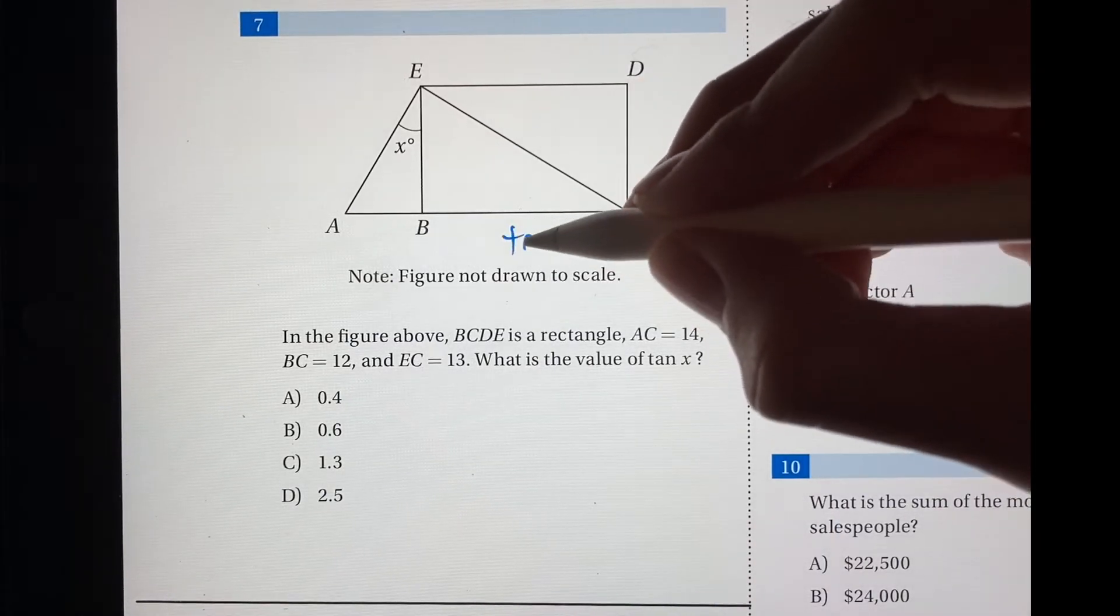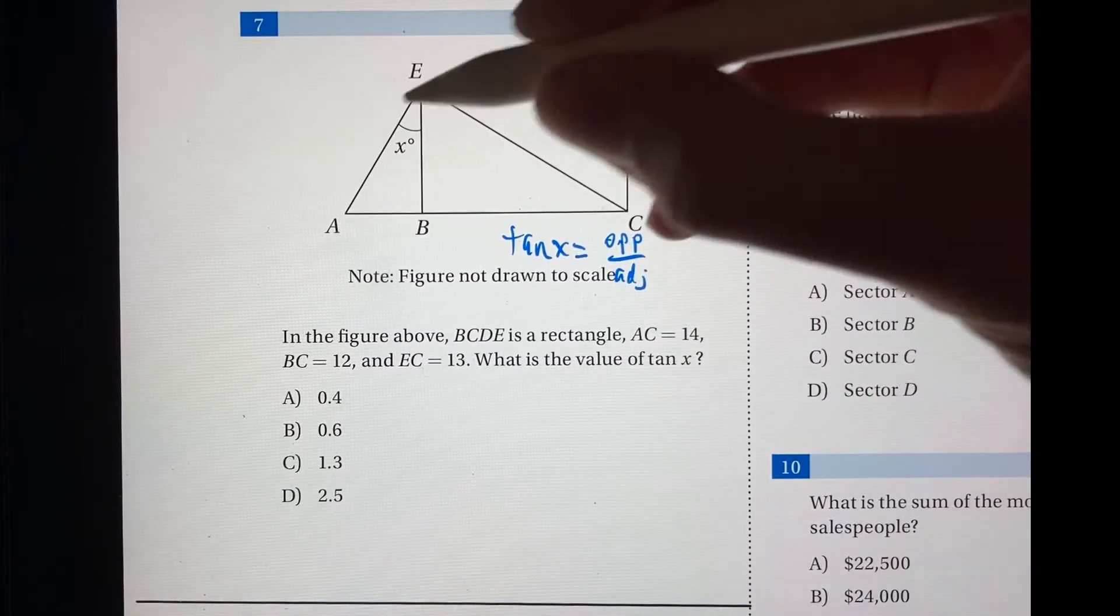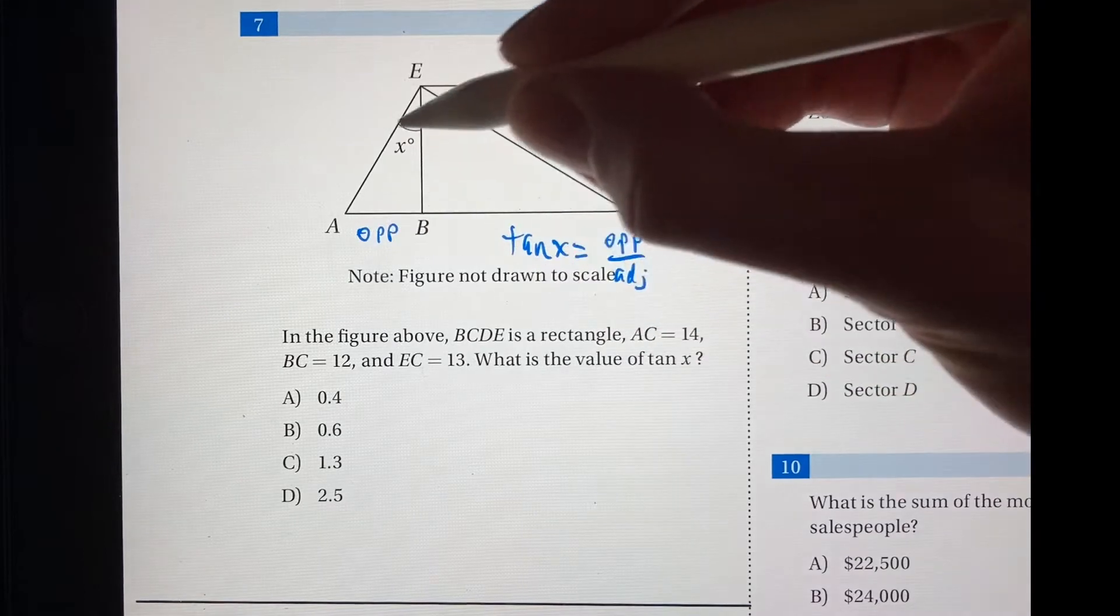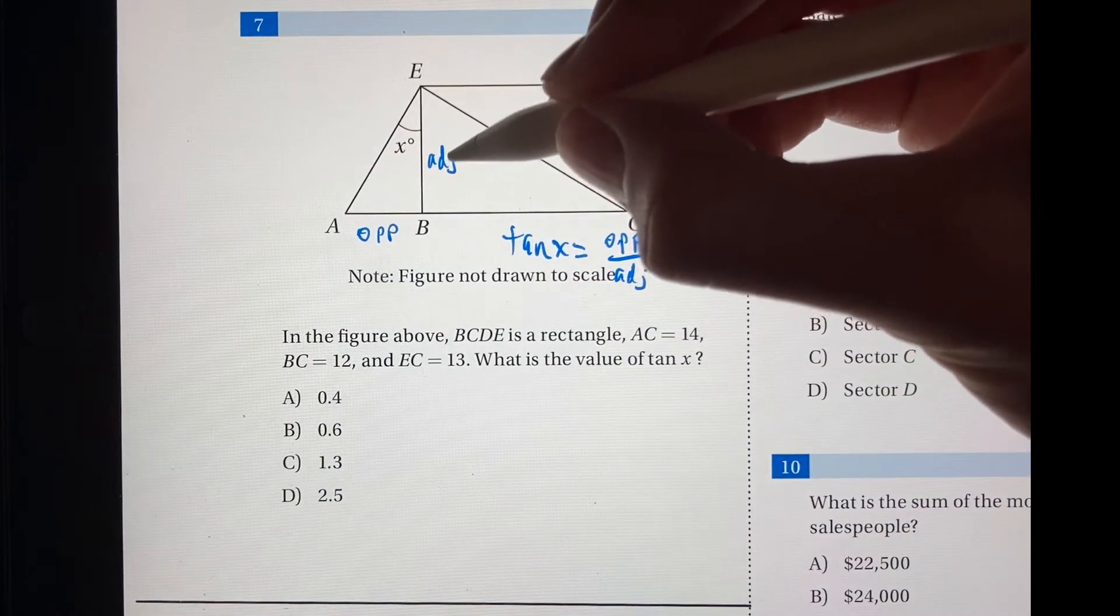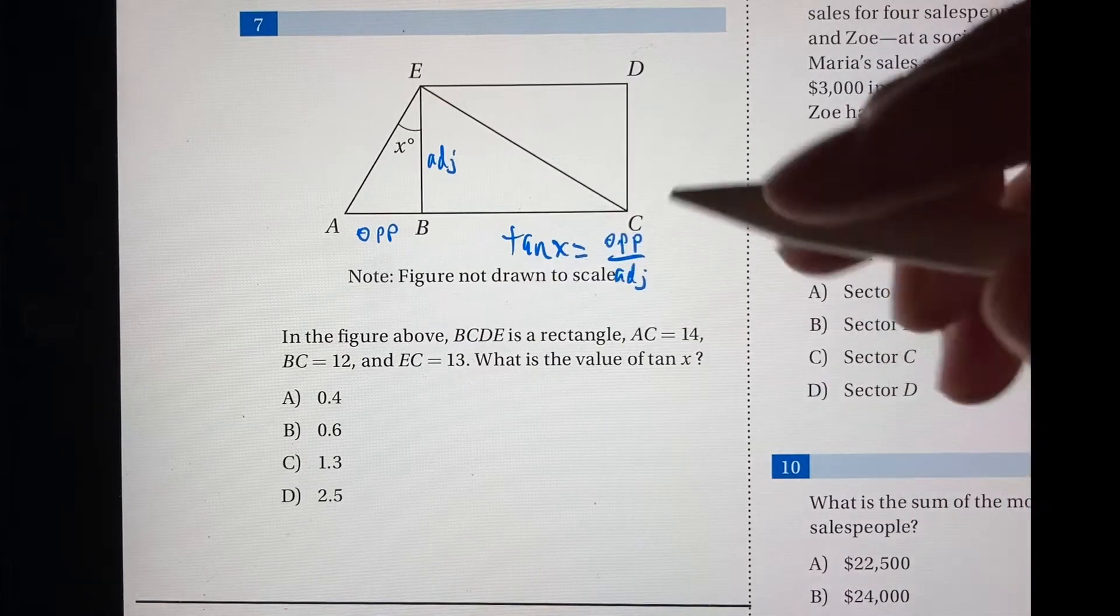So they want tan x, which we can rewrite as opposite over adjacent of the angle x. So this would be opposite, and adjacent would be this side right here. So it wants the ratio between these two side lengths. So we can start by just drawing what we know.